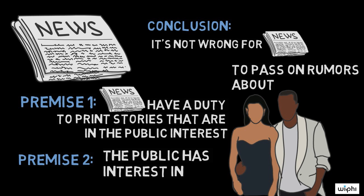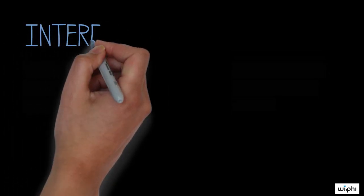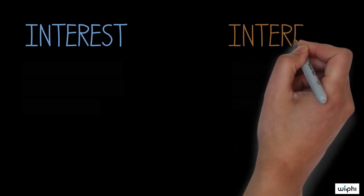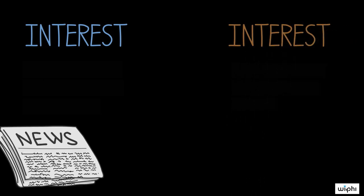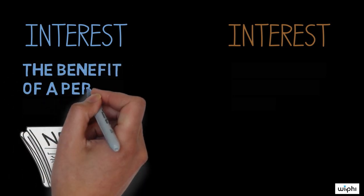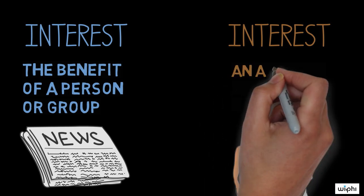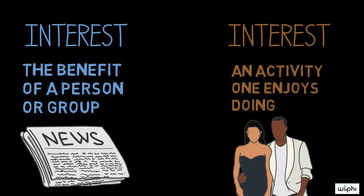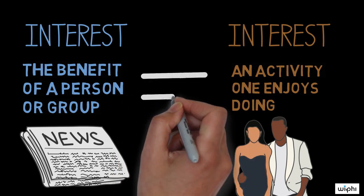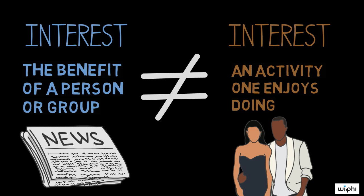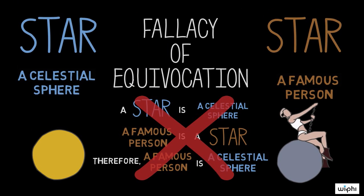As with our Miley Cyrus example, this argument appears to be valid. The key term that shows up in both premises is 'interest,' so let's focus on how it is used. In the first premise, 'interest' means the benefit of a person or group — like in the sentence, 'it is in your interest to keep your bank account information private.' In the second premise, 'interest' means an activity one enjoys doing — like 'my interests are swimming, hiking, and reading.' Since the meaning of 'interest' has shifted between the premises, this editor has committed the fallacy of equivocation. His argument isn't valid.